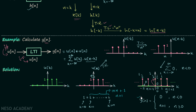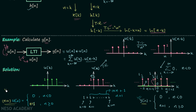The unit step sequence u[n] equals 0 when n is less than 0 and equals 1 when n is greater than or equal to 0. Multiplying n plus 1 by u[n]: when u[n] is 0 we get 0, and when u[n] is 1 we get n plus 1. Comparing this with our two-case definition, they are the same. Therefore y[n] equals (n+1) * u[n], which is the output when both the input and impulse response are u[n].